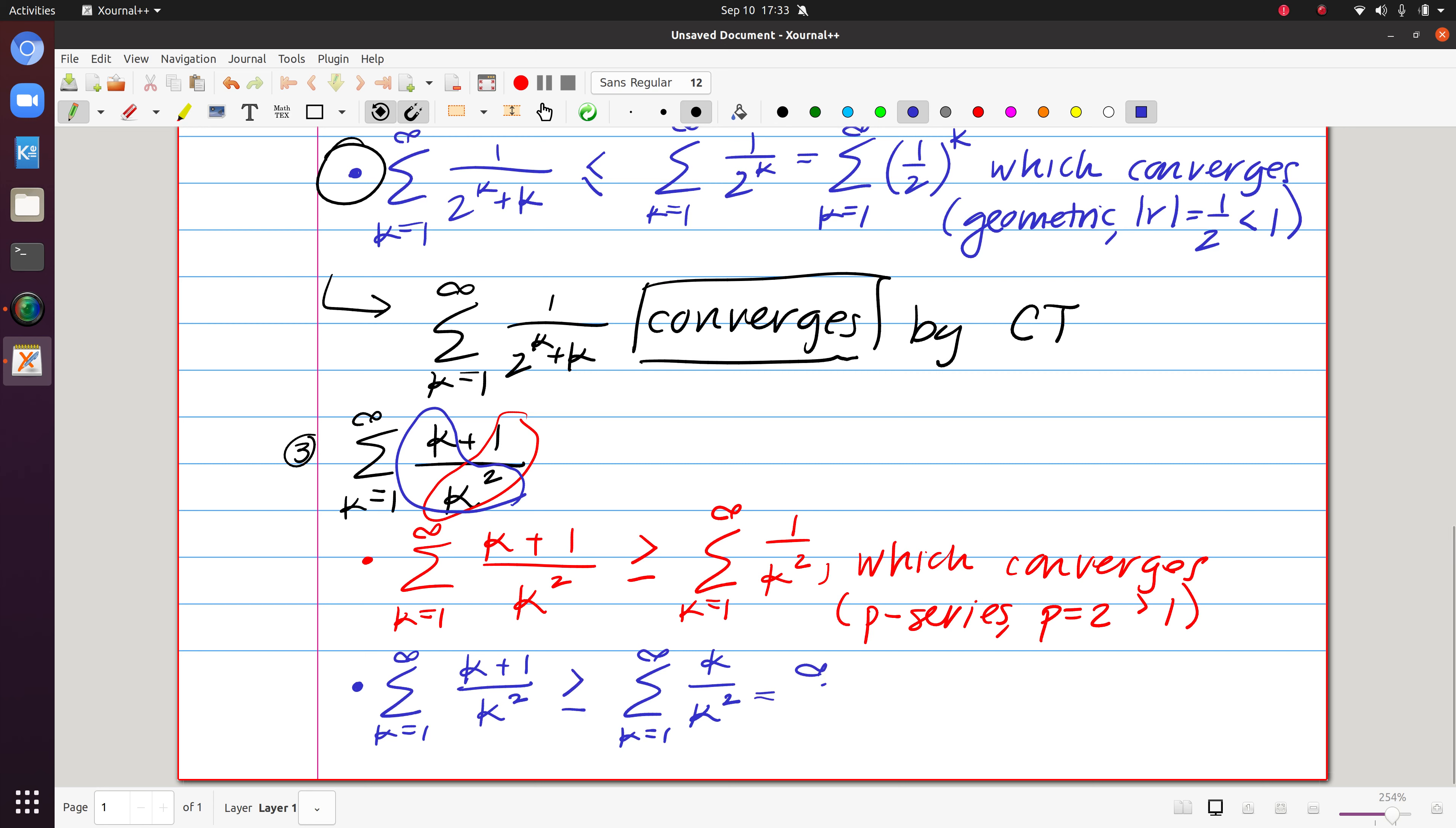However, this series is the same thing as the sum of one over k, right? I can simplify that. And this diverges.